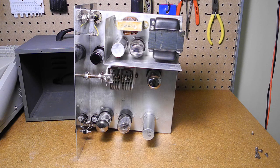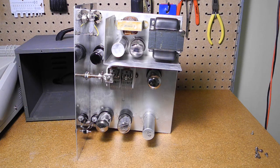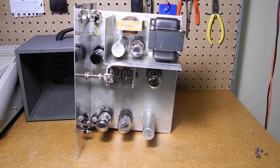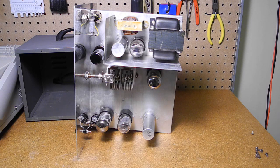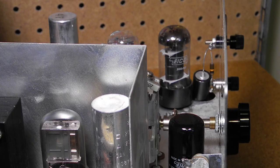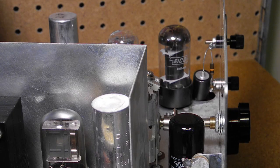Taking a look inside the unit, you can see it uses a heavy steel chassis with tubes and other major components mounted on it. Note that some of the tubes inside are EICO branded.